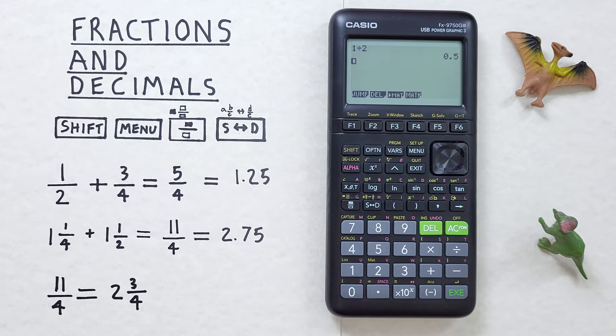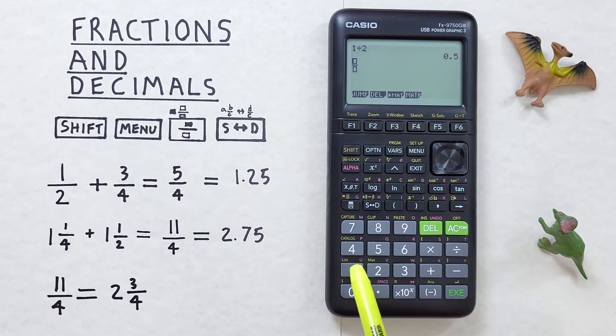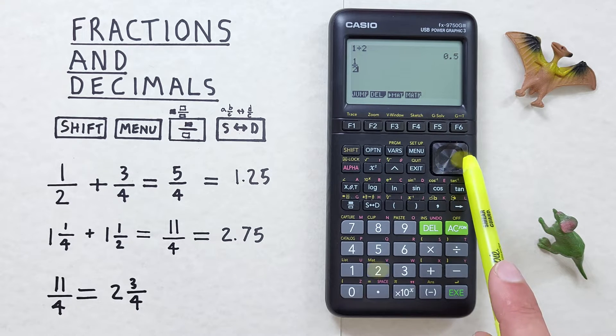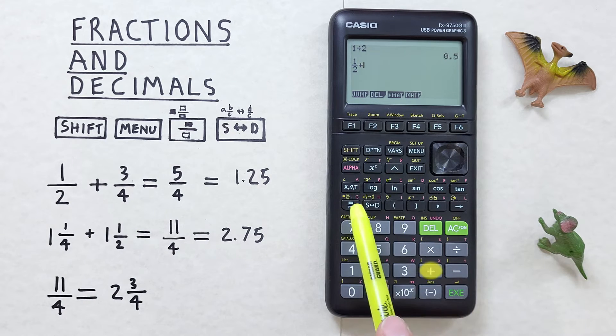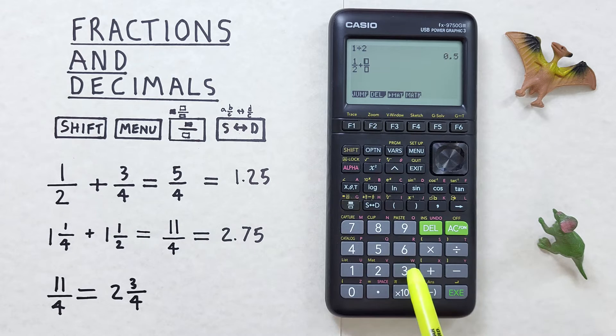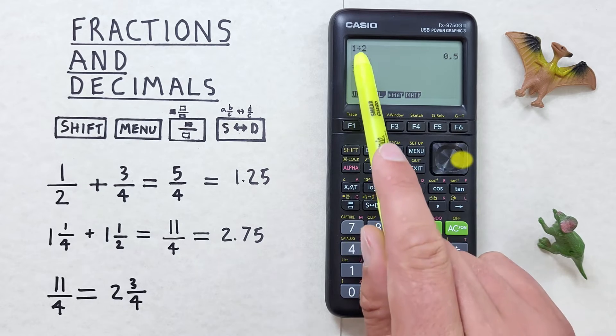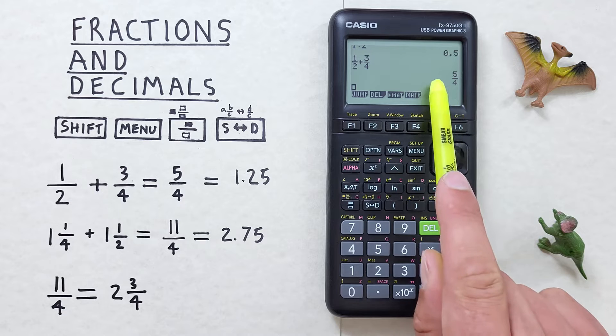If we're given fractions and want to enter them on the calculator like say this 1 over 2 plus 3 over 4, you can enter them using the fraction key. So if we press this we get two boxes that we can fill in. So for this we go 1 then scroll down and press 2 and then to the right. There we go, there's our 1 over 2. Plus and then the fraction key again, 3 in the top box, scroll down, 4 in the bottom box. There we go. We have 1 over 2 plus 3 over 4.